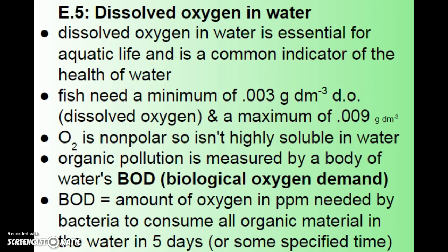DO level is a common indicator of the health of the water. Fish need a minimum of 0.003 grams per liter, which doesn't sound like very much, but they also can only have a maximum of 0.009 — so too high is also a problem for fish. O2 is nonpolar, so it isn't highly soluble, which is why that number is so low.